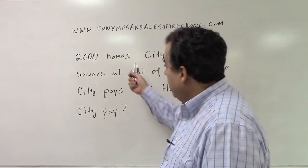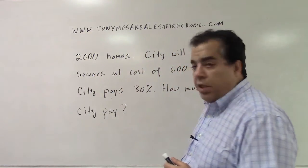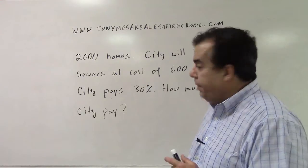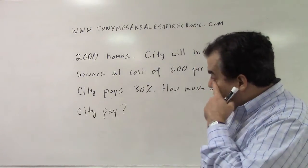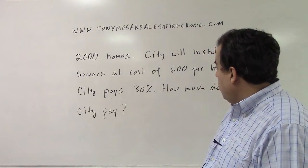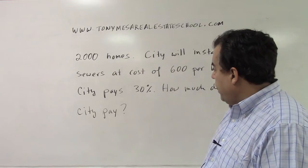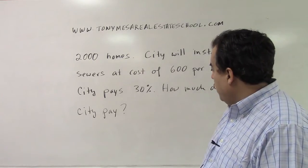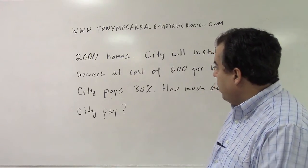This video deals with sewers. We have 2,000 homes. The city is going to install sewers at a cost of $600 per home. The city pays 30%. How much does the city pay?